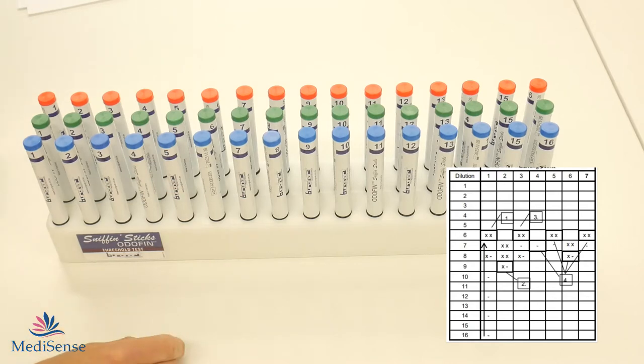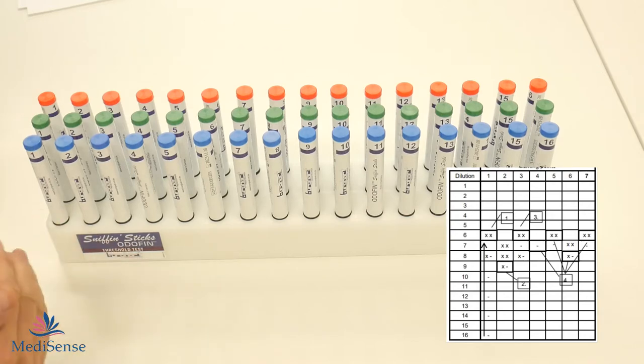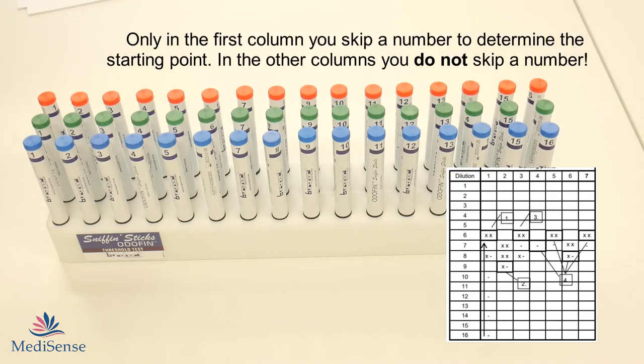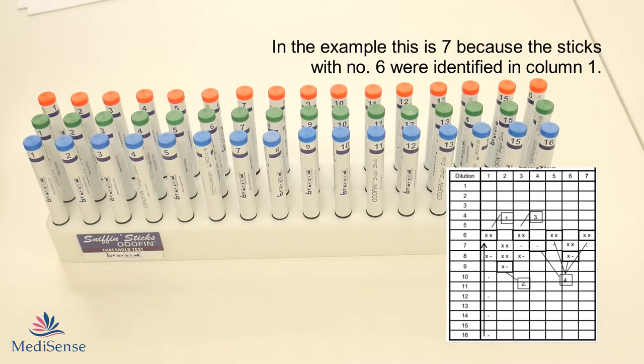Now that you have determined the starting point you go in a different direction. So not higher concentration but lower concentration. And that is in the second row of the scoring sheet. In the example you can see that now you will not skip a number but you will continue with the next lower concentration.